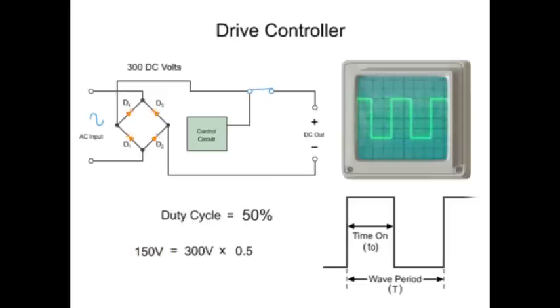Thus, controlling the speed of a motor can be achieved by modulating the square signal waveform.